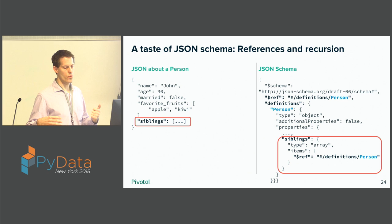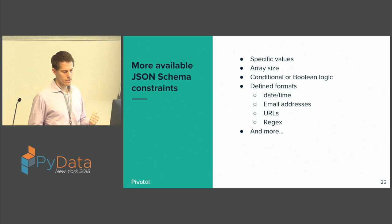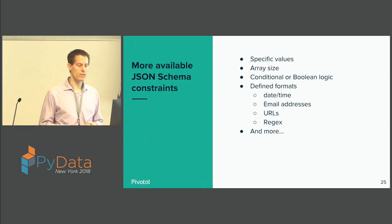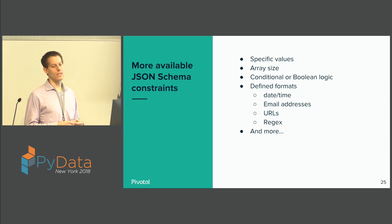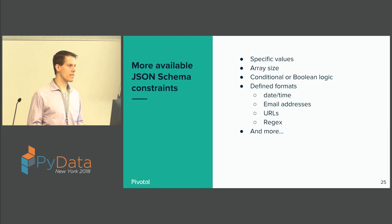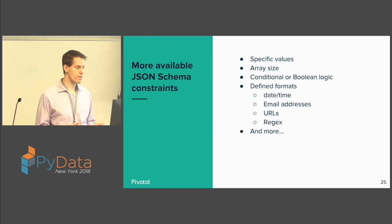Other ways of constraining the schema: you can look for specific values, look for the size of the array, have conditional or Boolean logic, define formats like date and time, email addresses, and regular expressions, and there's a lot more — it's a very powerful standard.